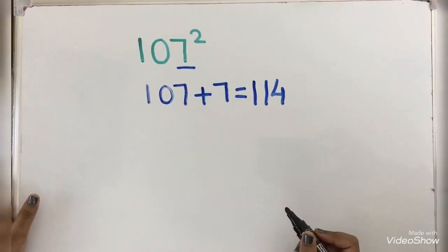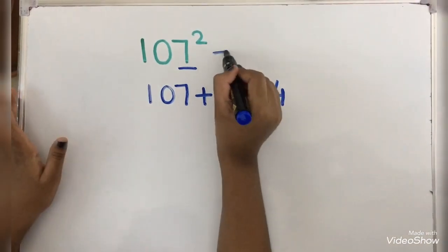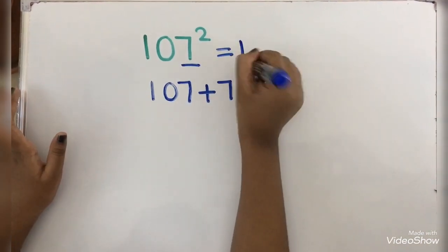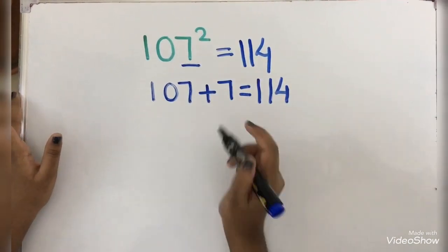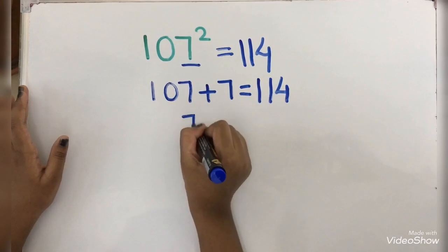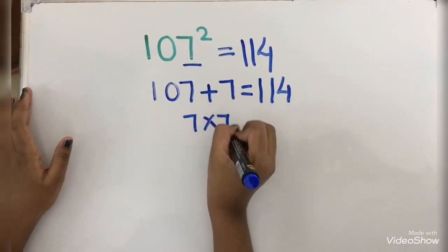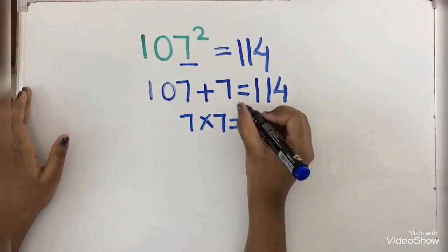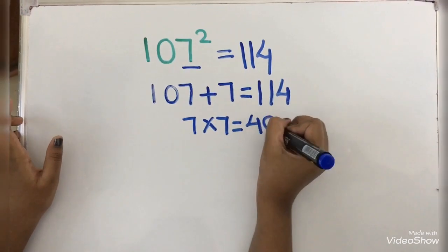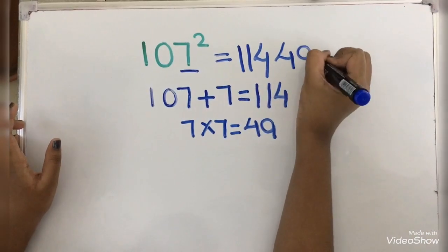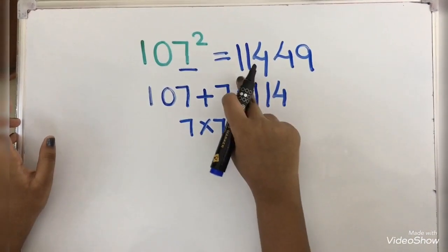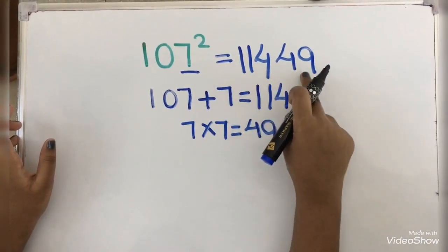Now we are going to write this 114 over here. Now we are going to multiply 7 into 7. 7 into 7 equals 49. So it is a two-digit number. Let's write it here. The answer is 11,449.